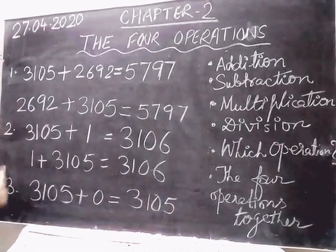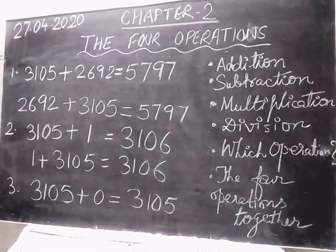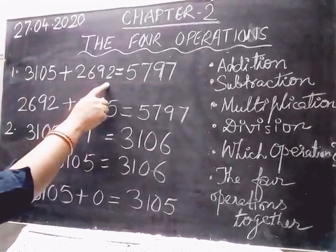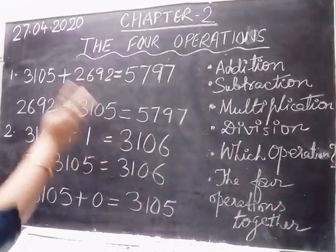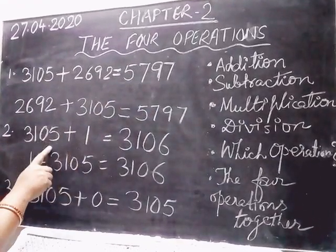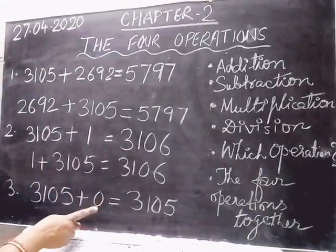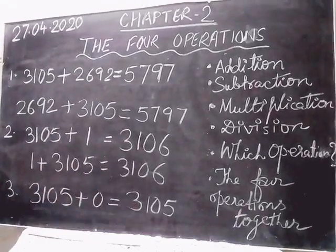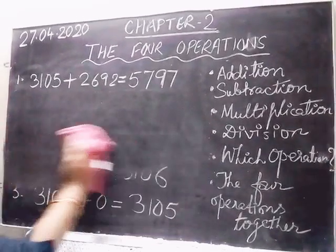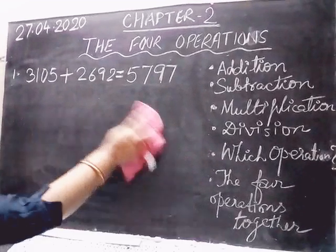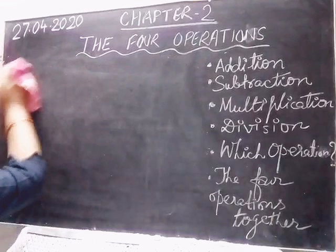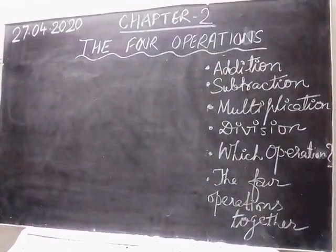So these are the three properties of addition. To recap: the numbers added are addends, and the answer is the sum. When we change the order, the sum does not change. When we add 1 to any number, we get the successor. When we add 0 to any number, we get the number itself. Now let's come to addition of large numbers.